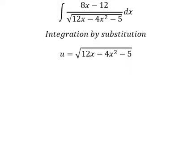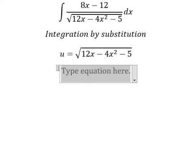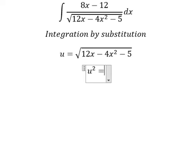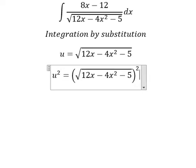Later, we put the square for both sides to cancel the square root.